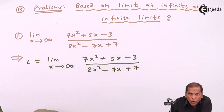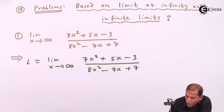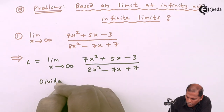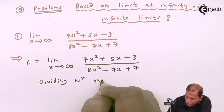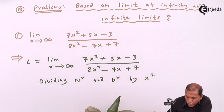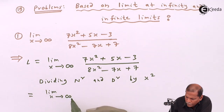Now divide the numerator and denominator by the greatest power present in the problem. Here the greatest power present in the problem is x squared. So the next step is dividing the numerator and denominator by x squared.